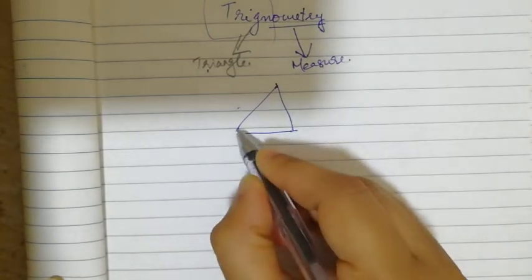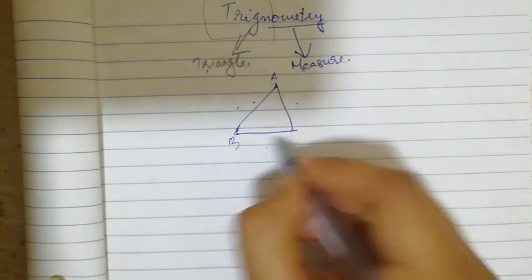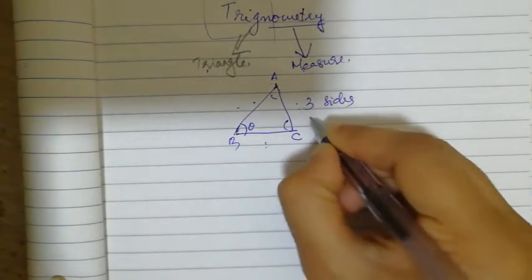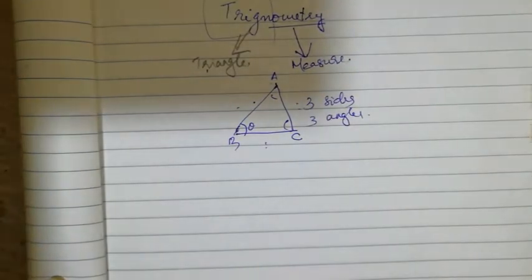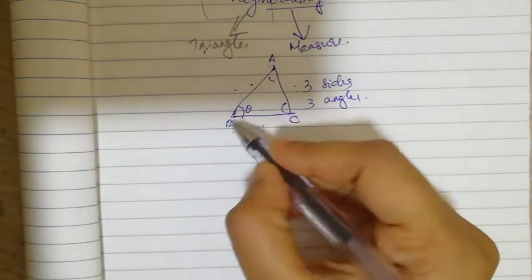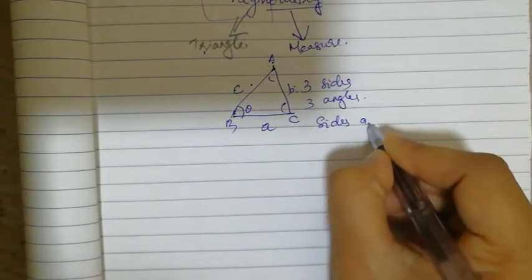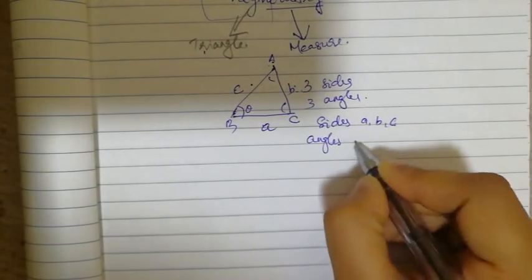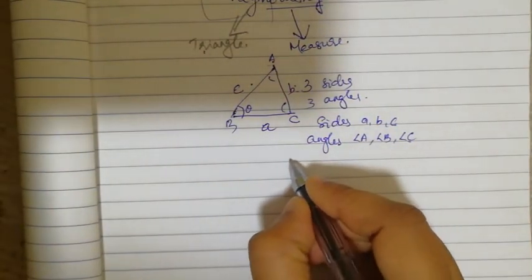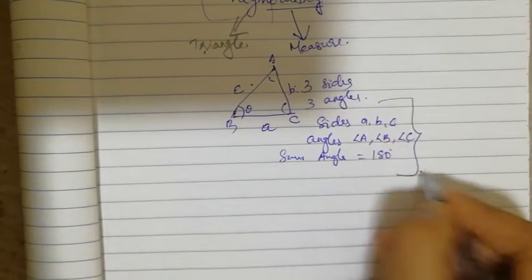This triangle has three sides — A, B, C — and three angles. So three sides and three angles make a triangle. This is a closed polygon; three line segments make a closed polygon, that is a triangle. Sides are A, B, C and angles are angle A, angle B, and angle C. The sum of the angles is 180 degrees — everybody knows this from lower classes.